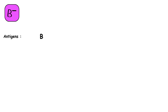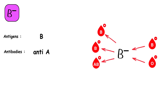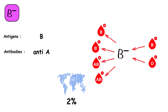B negative blood type features B antigens on the red blood cells and lacks the RH antigen, with anti-A antibodies in the plasma. Individuals with B negative blood can receive blood only from B negative and O negative donors due to the lack of the RH antigen. They can donate to B positive, B negative, AB positive, and AB negative recipients. Approximately 2% of the global population has B negative blood, making it one of the rarer types.